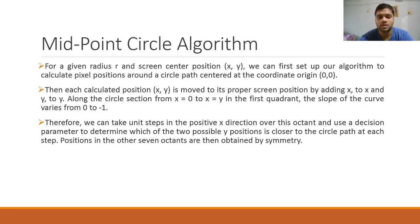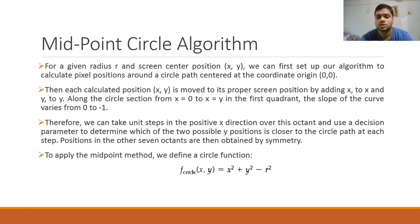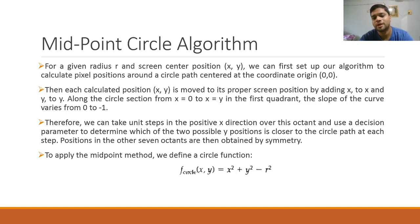We take unit steps in the positive x direction over this octant and use a decision parameter to determine which of the two possible y positions is closer to the circle path at each step. To apply the midpoint method, we use the circle equation centered at the origin: f(x, y) = x² + y² - r² = 0, which can also be written as x² + y² = r².